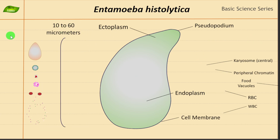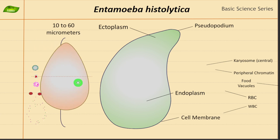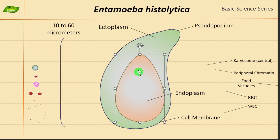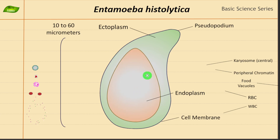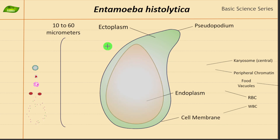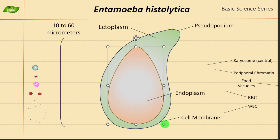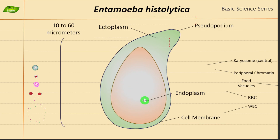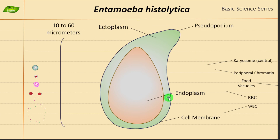Now let's move on to designing the other structures. You have to imagine this region is inside Entamoeba histolytica. I'm making something like this so we can differentiate between the central region and the outer region, which we are mentioning as the ectoplasm.